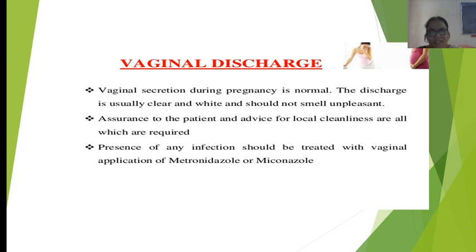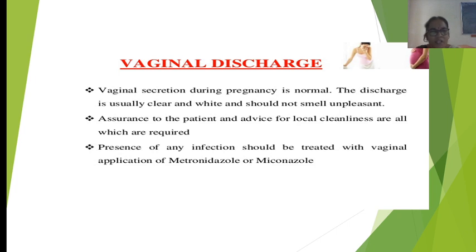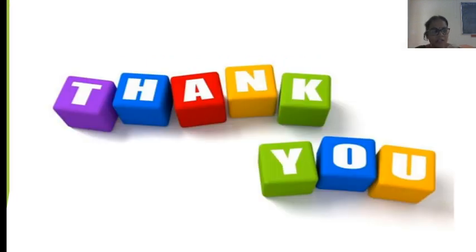Next is vaginal discharge, which is very common during pregnancy due to changes in vaginal pH caused by hormones. If the mother has foul-smelling or unpleasant vaginal discharge, she must seek the doctor's advice immediately. Normally the discharge is clear and white without any unpleasant smell. Management includes giving assurance to the patient and attenders, advice for local cleanliness, and treating any infection with vaginal metronidazole or miconazole. If not sufficient, the mother should see a doctor.